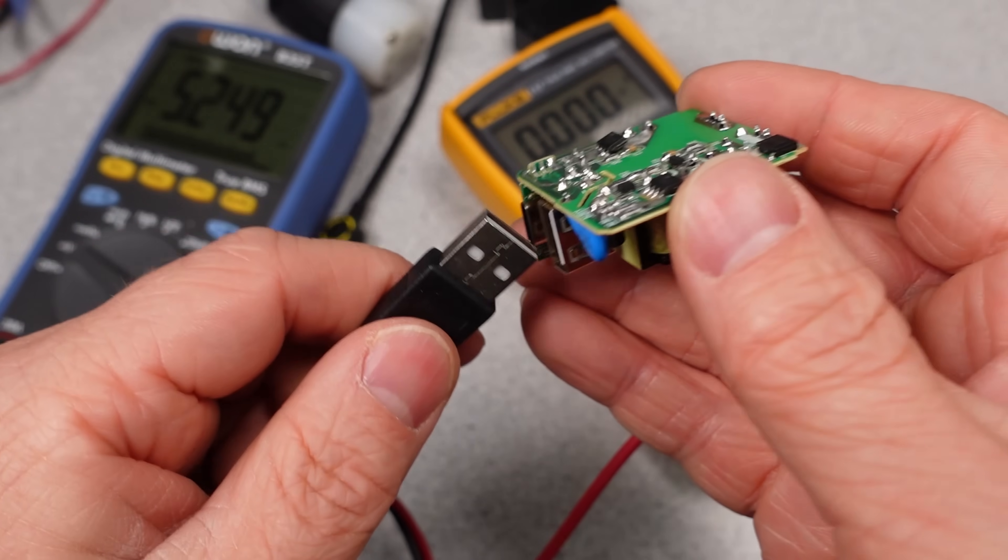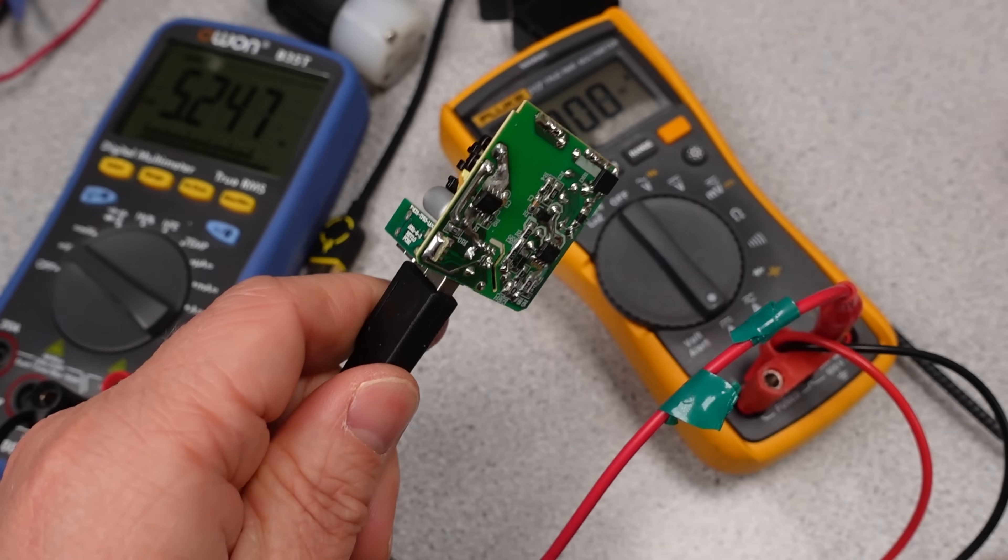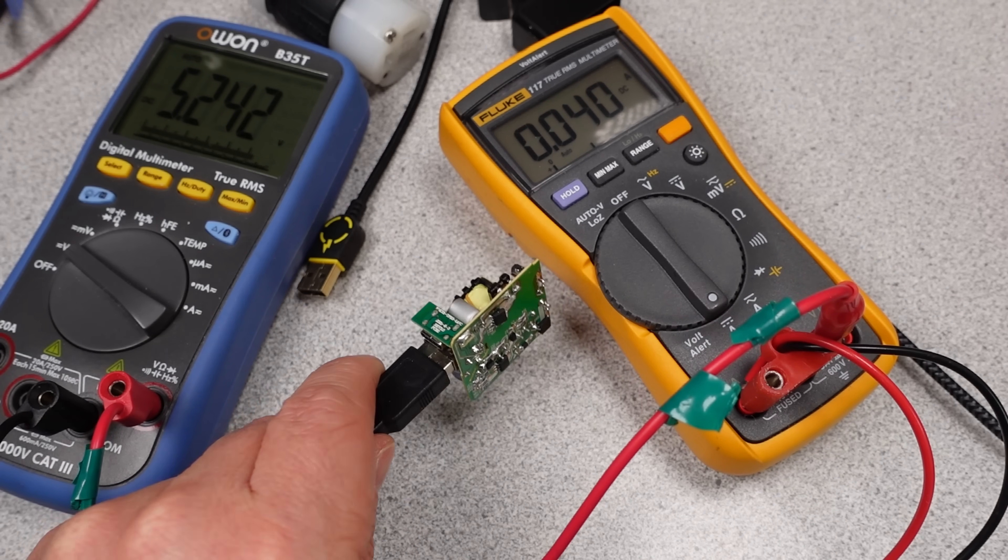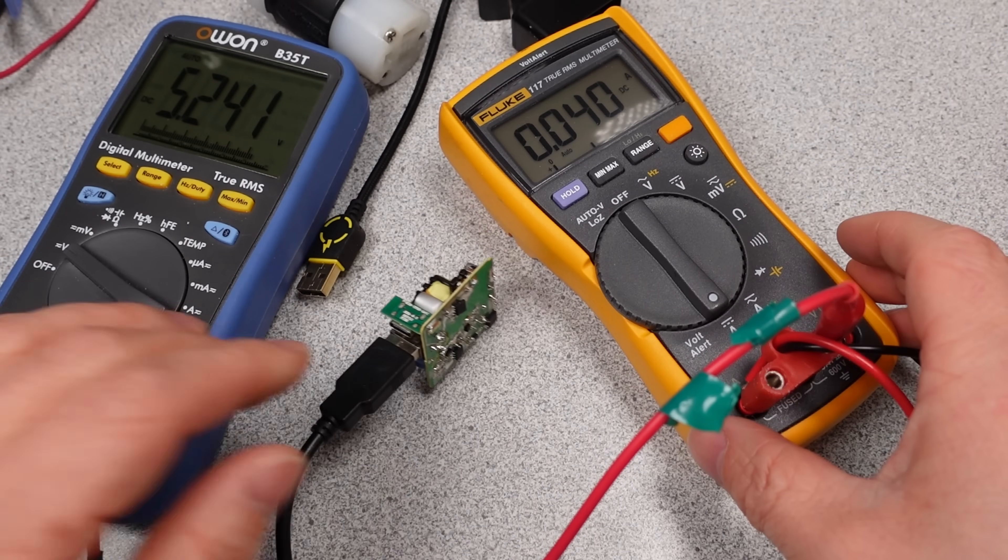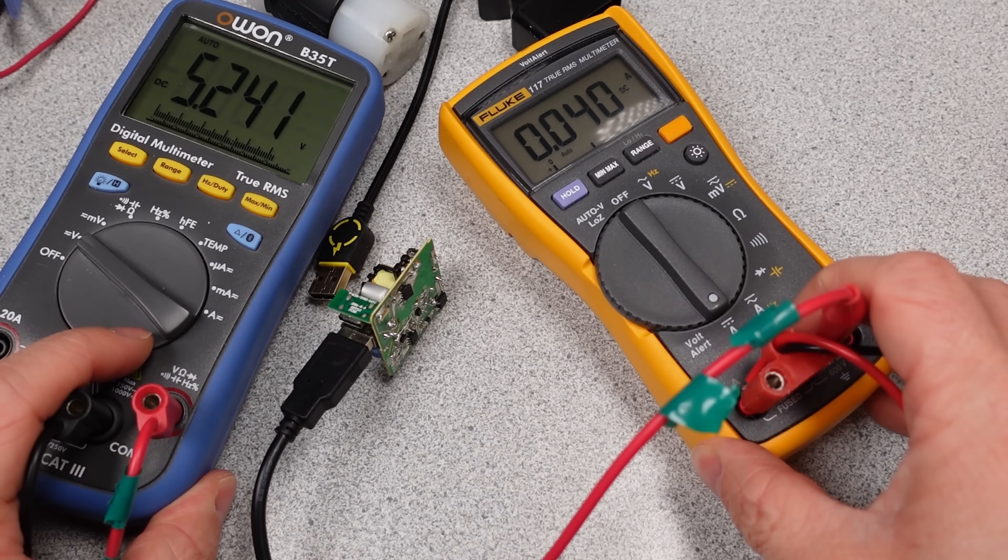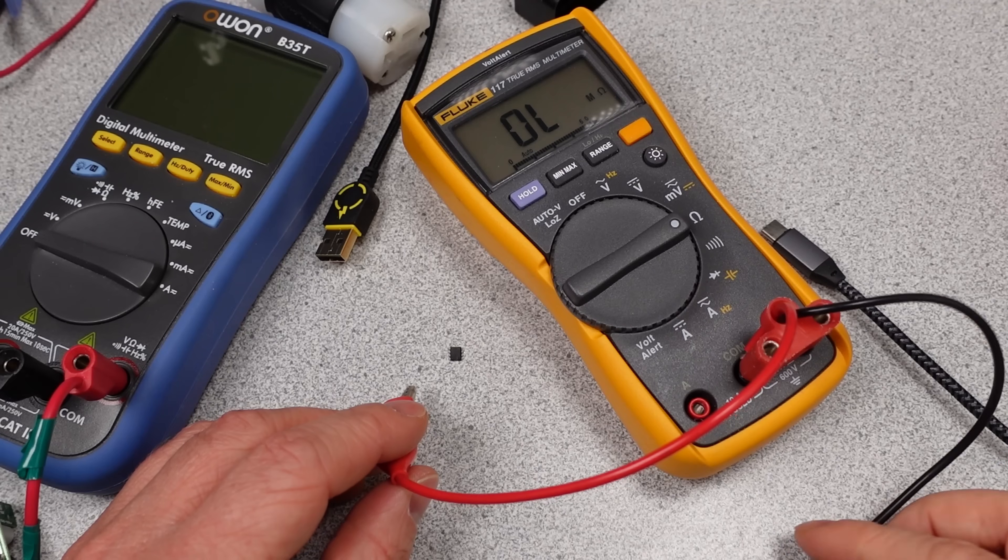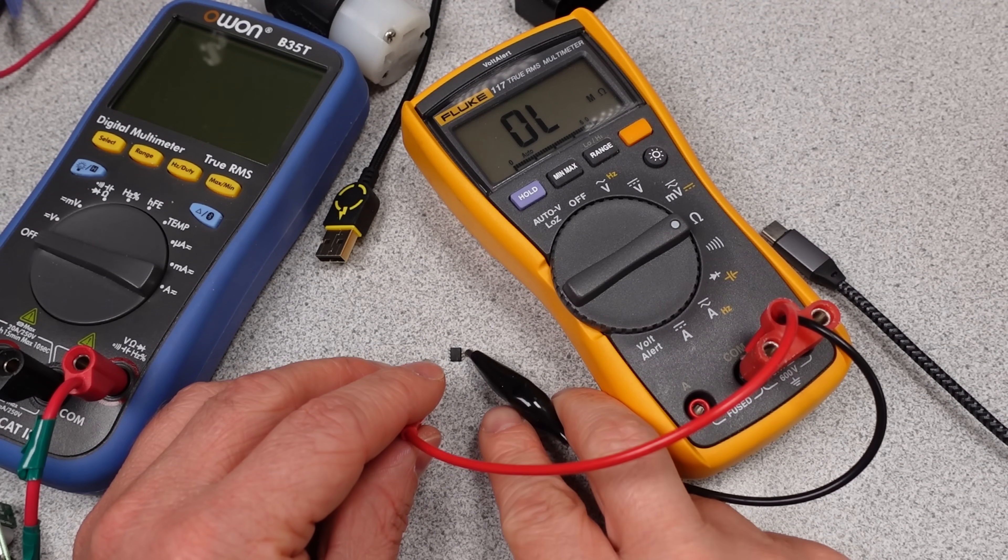Okay, so set back up with the two multimeters again. And yep, now this adapter's output looks just like the known good adapter. No short circuit anymore. Time to check this chip on its own to see if it's shorted outside the circuit. And yes, this chip is shorted. So what is this chip?